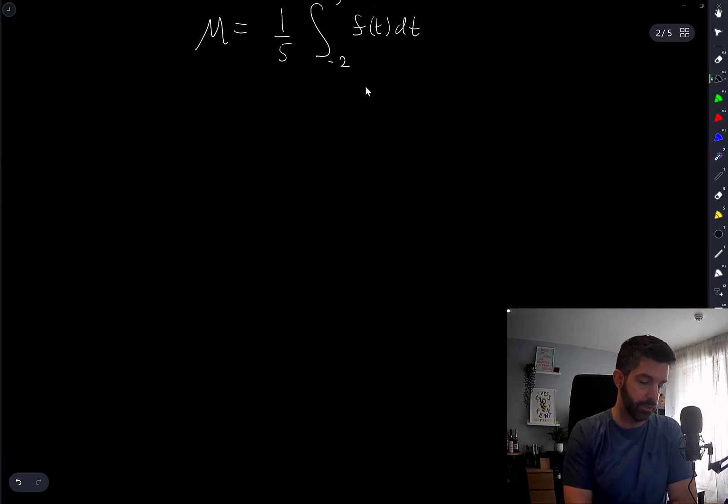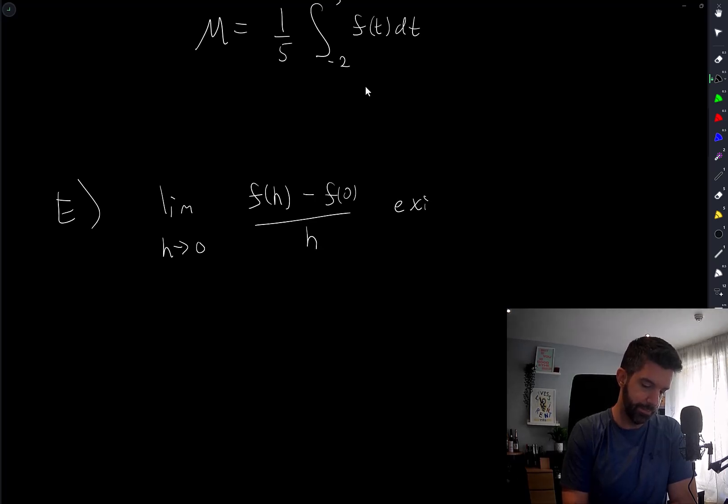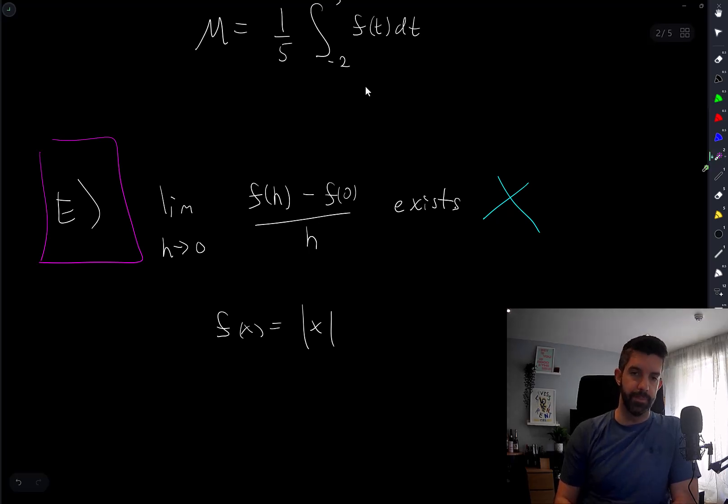And option E is clearly false. Right, this is the definition of the derivative at 0. But given that the function is continuous, it doesn't mean that its derivative exists. So a simple example, f of x is equal to absolute value of x. Right, so the answer to the question here is E. This does not necessarily have to be true. We can have a continuous function which is not differentiable at 0, and it satisfies all the other criteria.